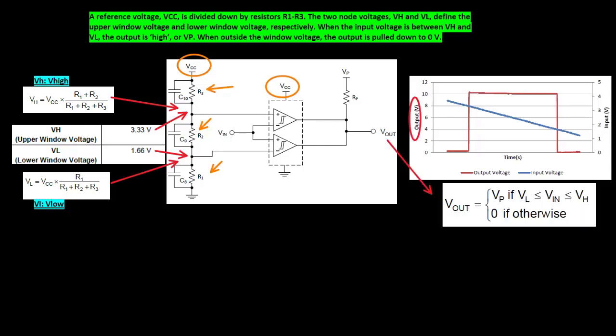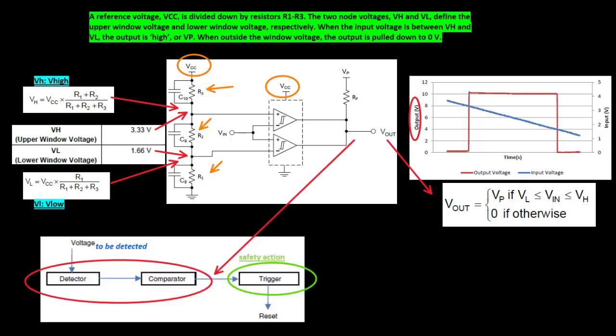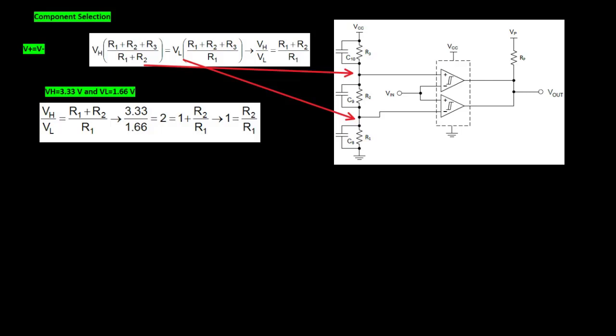When the input voltage is between VH and VL, the output is high, or Vp. When outside the window voltage, the output is pulled down to 0V.